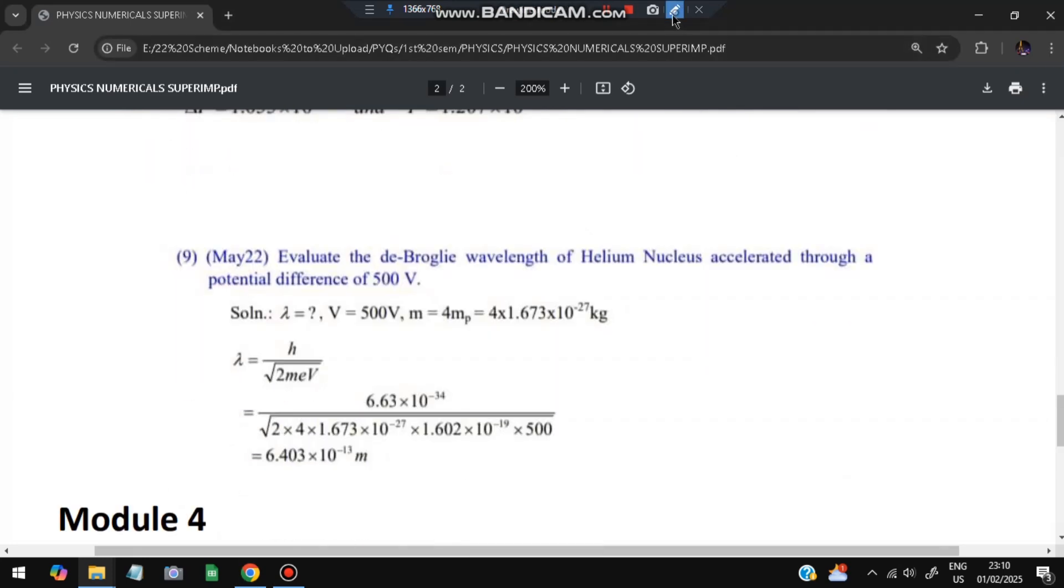They can ask you the de Broglie wavelength to find out the wavelength given the potential difference. Lambda is given and the formula is h/√(2meV). We substitute the h value and the V value is given. We'll substitute the V value here and we'll get the wavelength, which is 6.403 × 10^-13 meters.